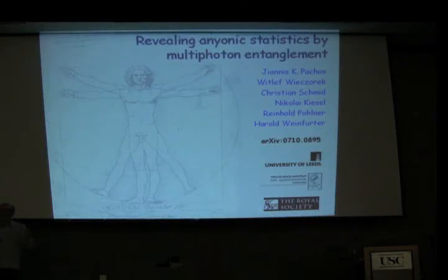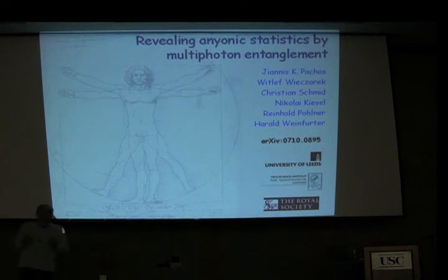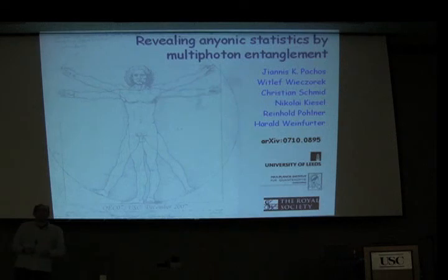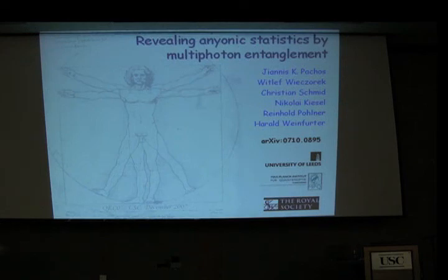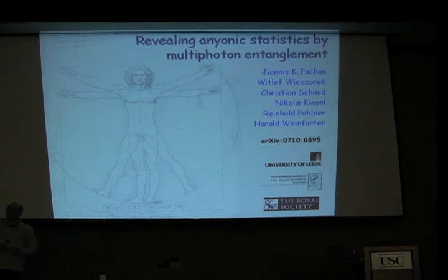These particles do not interact so the Hamiltonian is zero, but they have non-trivial statistical properties — that's why they're interesting. When we want to implement them physically, we simulate this type of model in the ground state of certain physical models. For example, that's exactly what happens with the quantum Hall effect: we simulate topological field theories in the ground state of a two-dimensional electron system. Here I will describe something different: we'll pick up a simple ionic model, the Toric code, and implement it with photons.